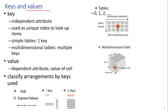Keys are independent attributes used as a unique index to look up items. For simple tables we have only one key, but for multidimensional tables we have multiple keys. For values we have dependent attributes — those are the y values, meaning the value of the cell itself.